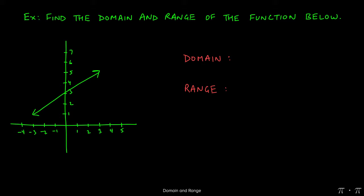Let's say we're given the graph of this function and we're asked to find the domain and range. The arrowheads indicate that the function doesn't ever stop — it goes on forever in both directions. Because there are no holes, asymptotes, or any breaks in the graph, we say that the domain is from negative infinity to positive infinity.